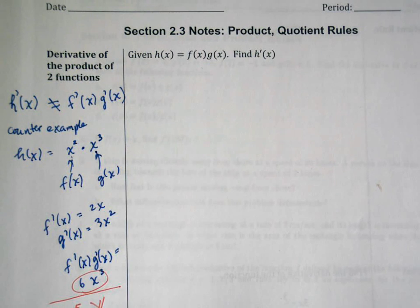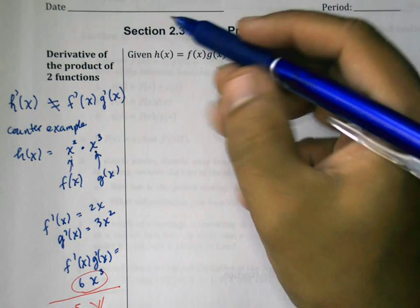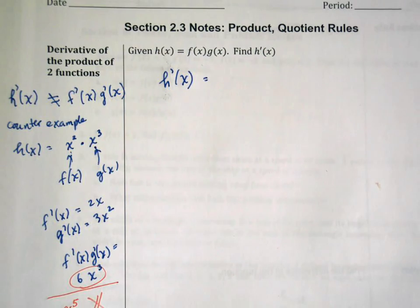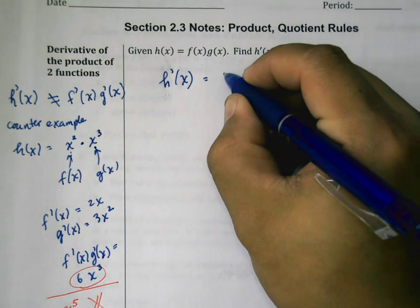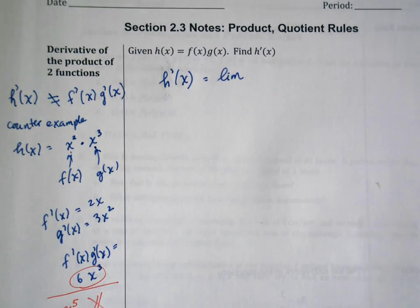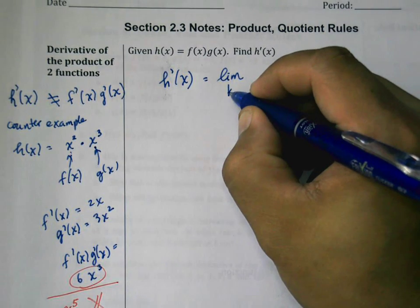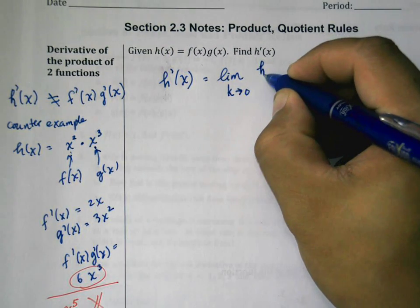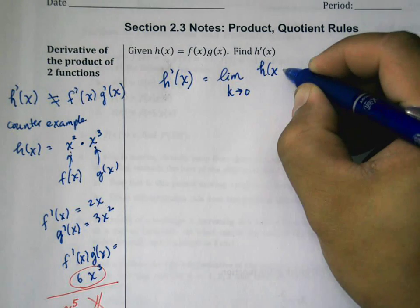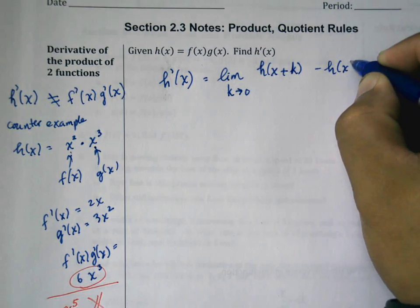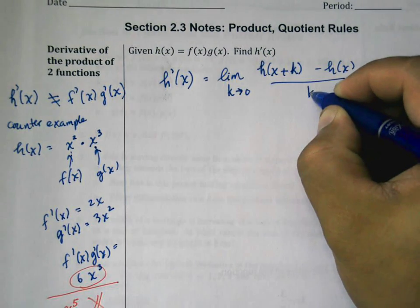If only we could just simply take the derivative of one, take the derivative of the other and multiply them together, that would make life a lot easier. Unfortunately that's just not true. So we're going to have to go back to the original definition of a derivative. We know that h prime is going to be equal to the limit as k approaches zero of h of x plus k minus h of x divided by k.